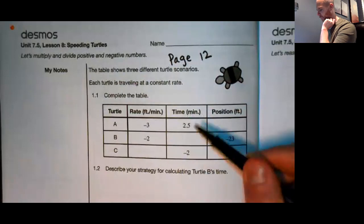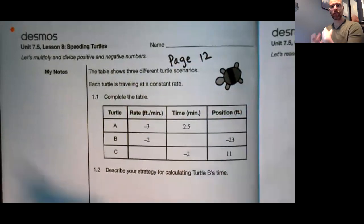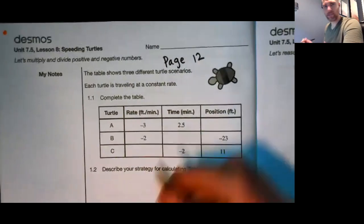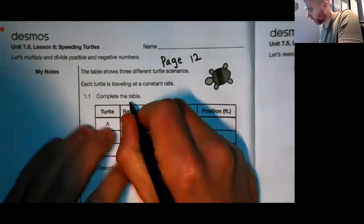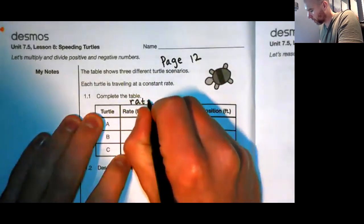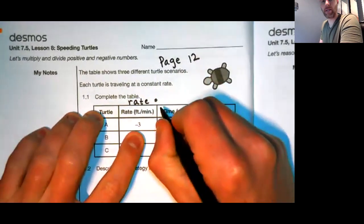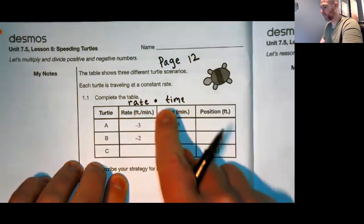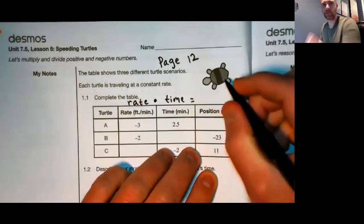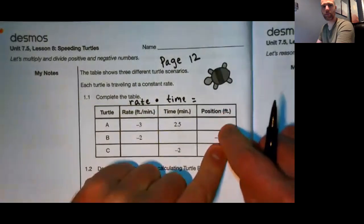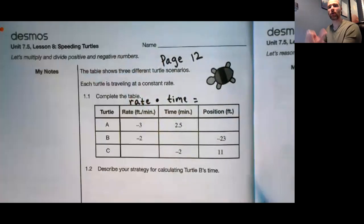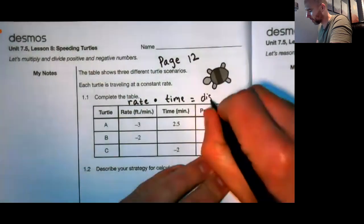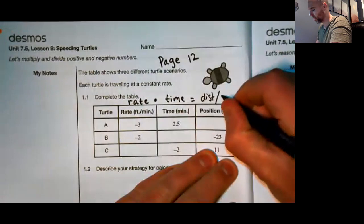Here in this column, the third column, is the amount of time that the turtles have traveled for, and then in the last column is their final position, wherever they end up at. There's a little formula or equation you may or may not know at this point: rate times time equals distance. But in this case, distance and position are the same thing, because the turtles always start at zero.